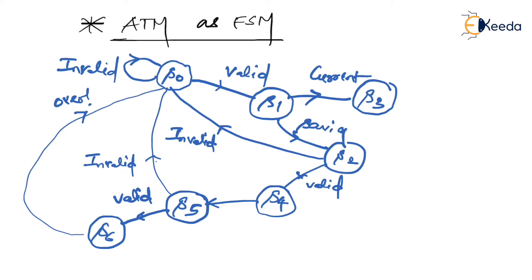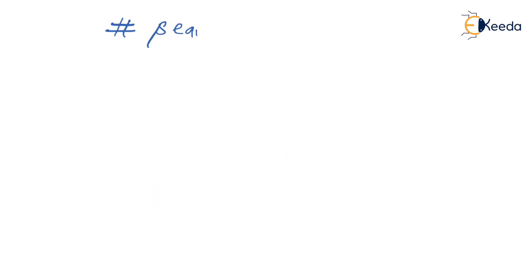From a GATE exam point of view, we are not going to design full finite state machines, but it is essential to understand a sequence detector, which is a special type of finite state machine. So from GATE's perspective, what is important is to study a sequence detector.